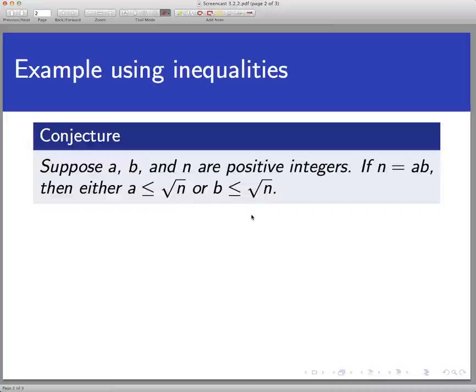Now, a direct proof of this statement would assume n is equal to a times b and do some math and show that either a is less than radical n or b is less than or equal to radical n. Now, there's no obvious way to go from this simple equality to one of these two inequalities.